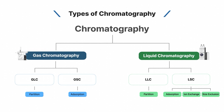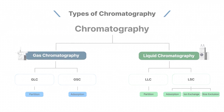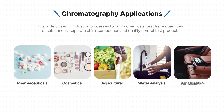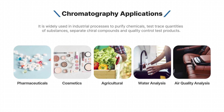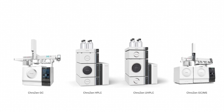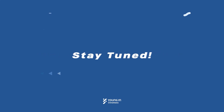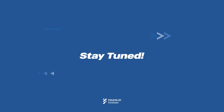This is the brief classification of chromatography types, and you can see how chromatography is classified at a glance. Chromatography is widely used in industrial processes to purify chemicals, test trace quantities of substances, separate chiral compounds, and quality control test products. Want to learn more about chromatography? Please stay tuned on the Yonge and Chromass channel.